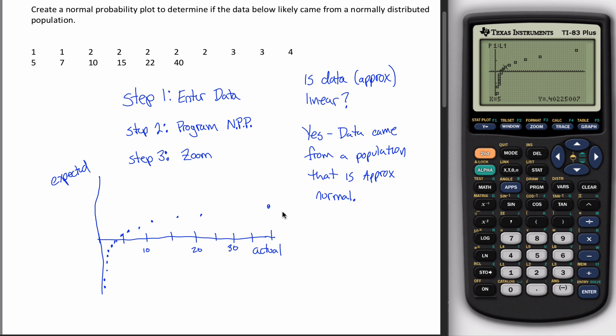Because if actual and expected are more or less the same, it ends up making these dots show up in a straight line. And if that doesn't happen, if the data is not approximately linear, no, then it's not approximately normal.